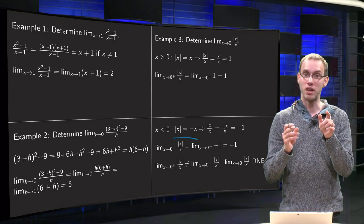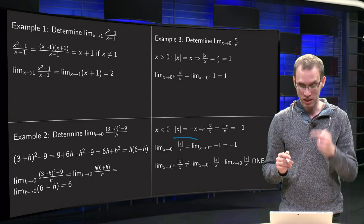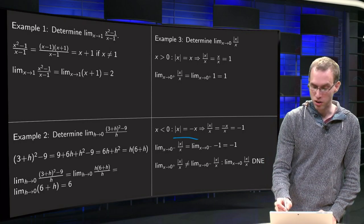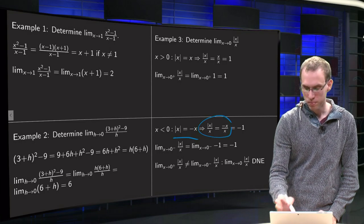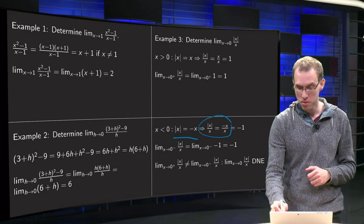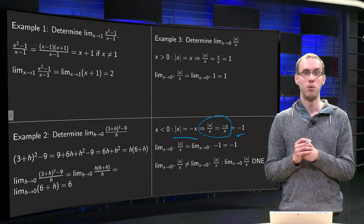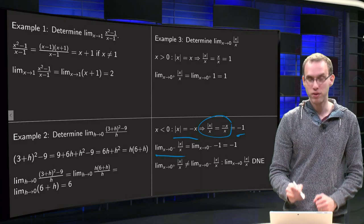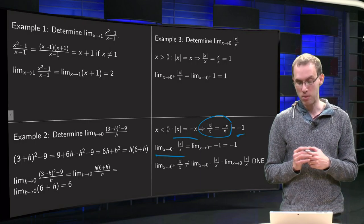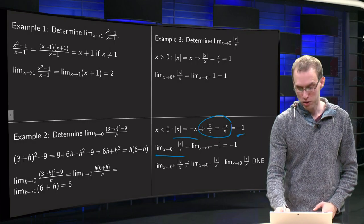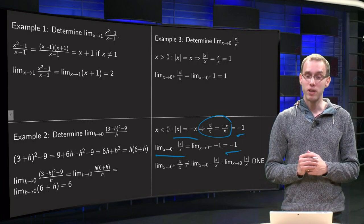So, absolute value of x equals minus x, so our function becomes x absolute value over x equals minus x over x equals minus 1 now. Well, still no problem in the limit, right? Limit x to 0 of x absolute value over x is just now limit x to 0 of the function minus 1 equals minus 1. But look what happens now.